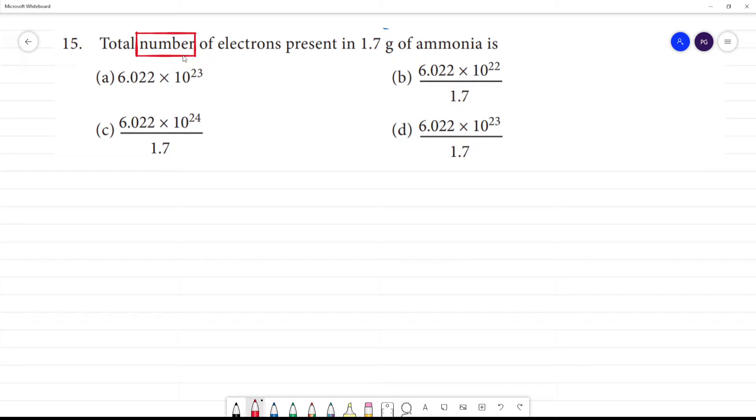The total number of electrons present in 1.7 grams of ammonia. We have a trick to tell you about the number. What do we do? Let us know the formula.